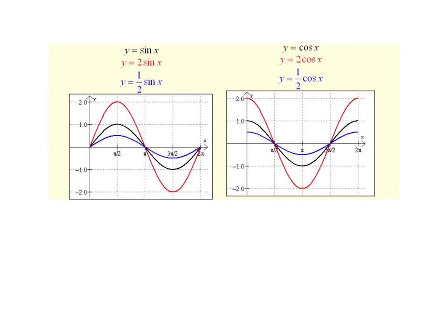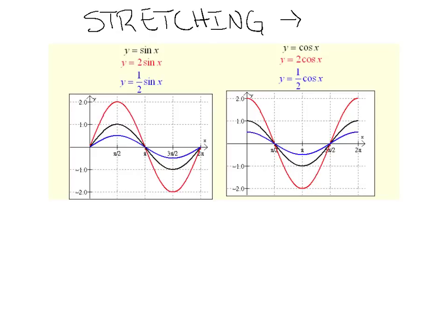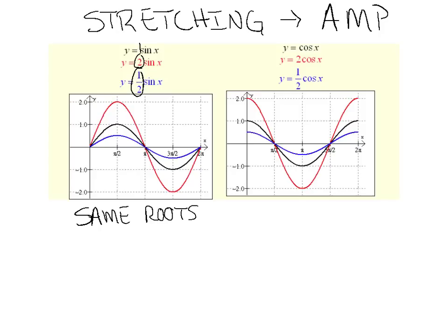As a warm-up activity before we do any vertical shifting, I want to ask what are we altering in these pictures? All three curves — the red, the black, and the blue — are all sine curves, but they're getting taller and shorter. This is what we call a stretching activity. We are stretching these graphs, and when you're stretching a graph, you're manipulating its amplitude. We had an amplitude of 1 on the black graph, 2 on the red graph, and 1 half on the blue. What do all three have in common? The same roots — at 0, pi, and 2 pi.